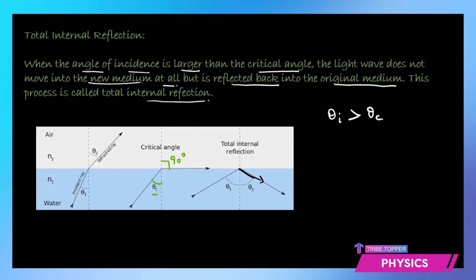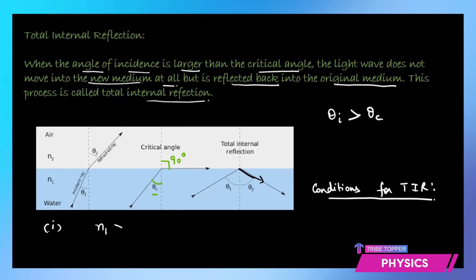This process is called total internal reflection — the phenomenon of a ray reflecting completely back into the denser medium when the angle of incidence is greater than the critical angle. There are two important conditions for total internal reflection to occur. First, the first medium must be denser and the second medium lighter, meaning the ray travels from denser to lighter medium — refractive index of the first is greater than refractive index of the second. Second, the angle of incidence must be greater than the critical angle. Only if both conditions are satisfied does total internal reflection happen.